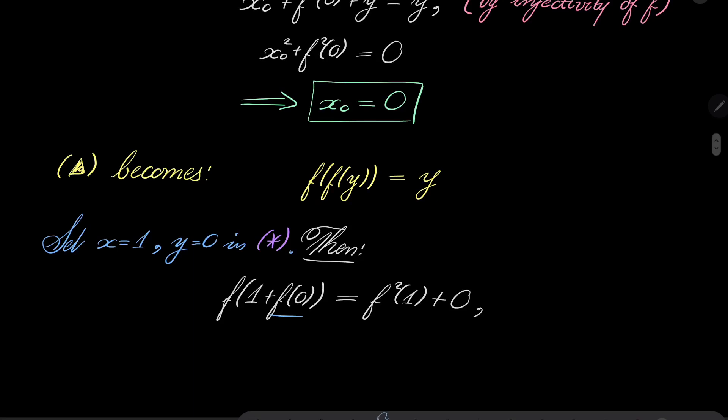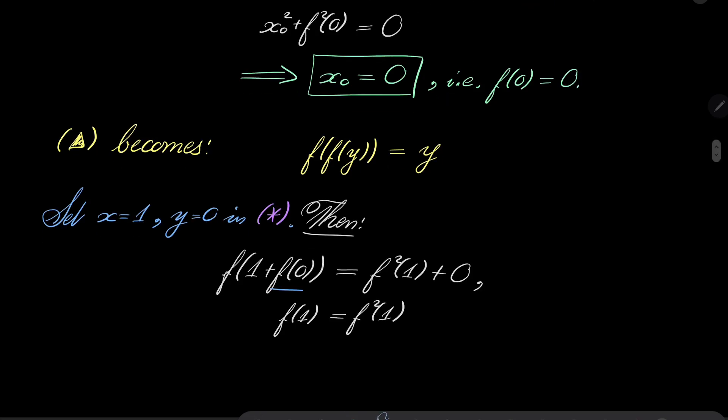Now, let's notice something. f of 0 we have established. Since x0 is 0, it means that f of 0 is 0. So, we have f of 1 equals f squared of 1. And now let's take a look.